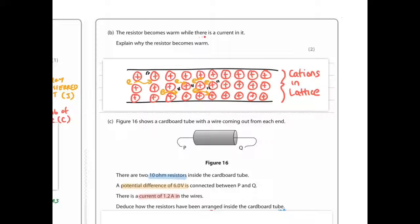The resistor becomes warm while there's a current in it. Explain why the resistor becomes warm. This used to be a really standard question, which you'd answer like this. Electrons moving through the lattice or through the wires will collide with cations, causing them to vibrate. This is a lattice, basically a lattice structure with these positive cations, the nuclei, positively charged nuclei of the metal, in a regular arrangement.